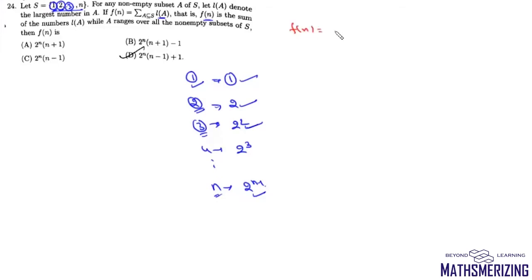Now we'll find F(N). F(N) will be 1×1 + 2×2 + 3×2² + ... + N×2^(N-1).